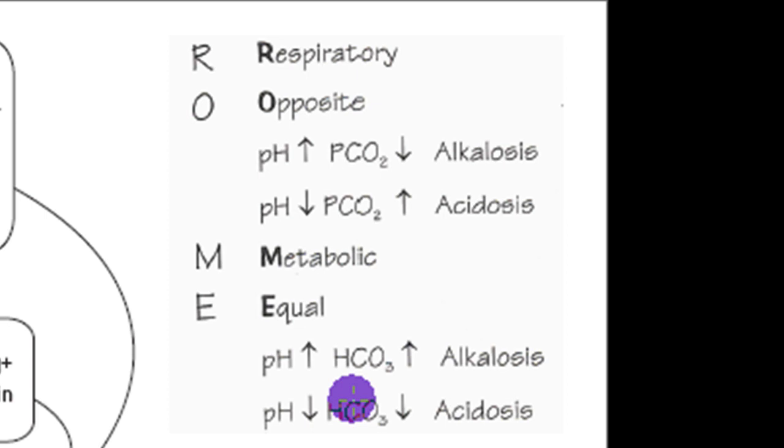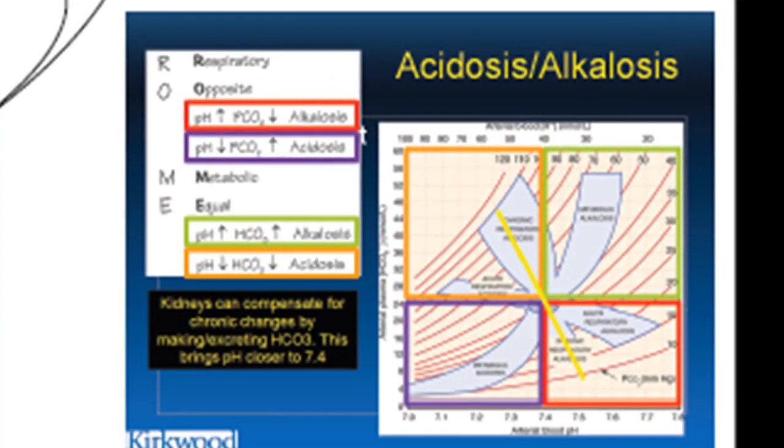If, on the other hand, we have alkalosis and we have very rapid breathing, that rapid breathing is probably the reason for the low CO2 and the alkalosis, so the problem is respiratory.